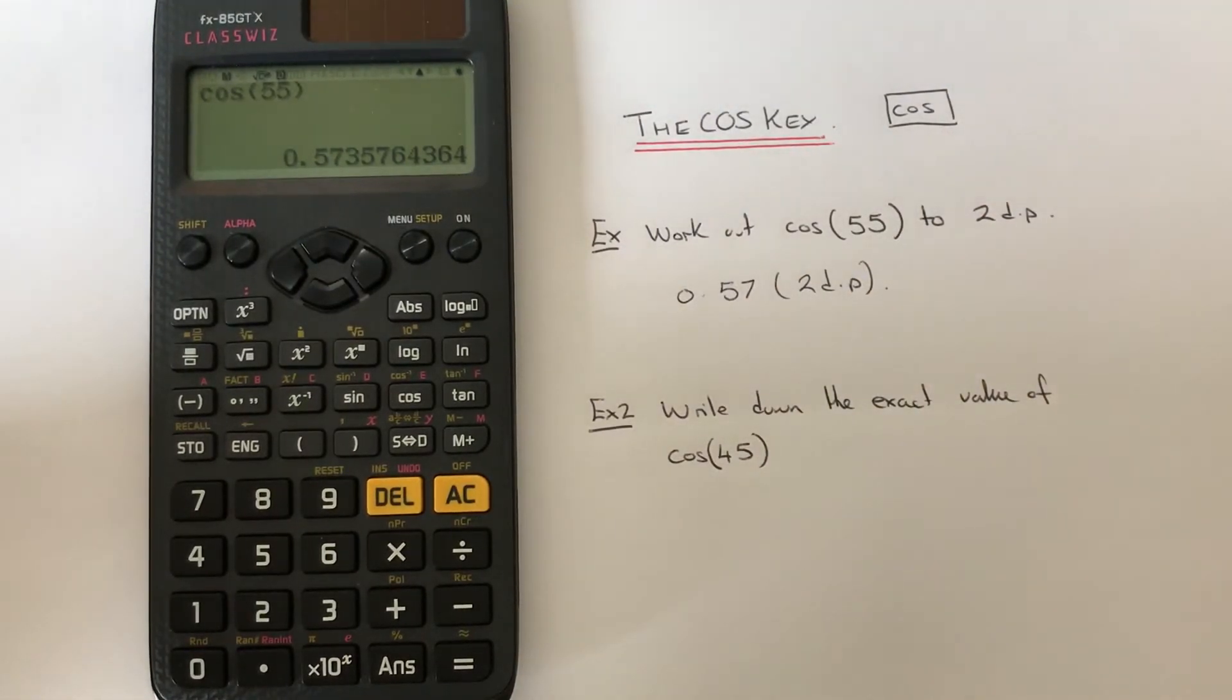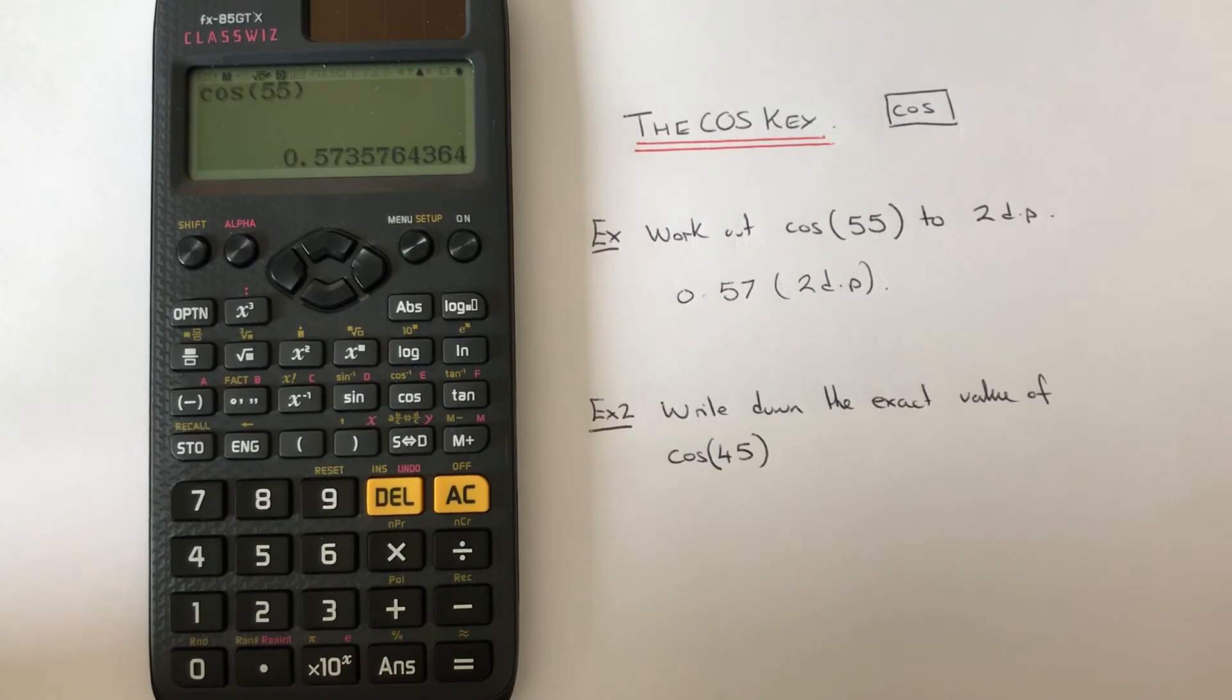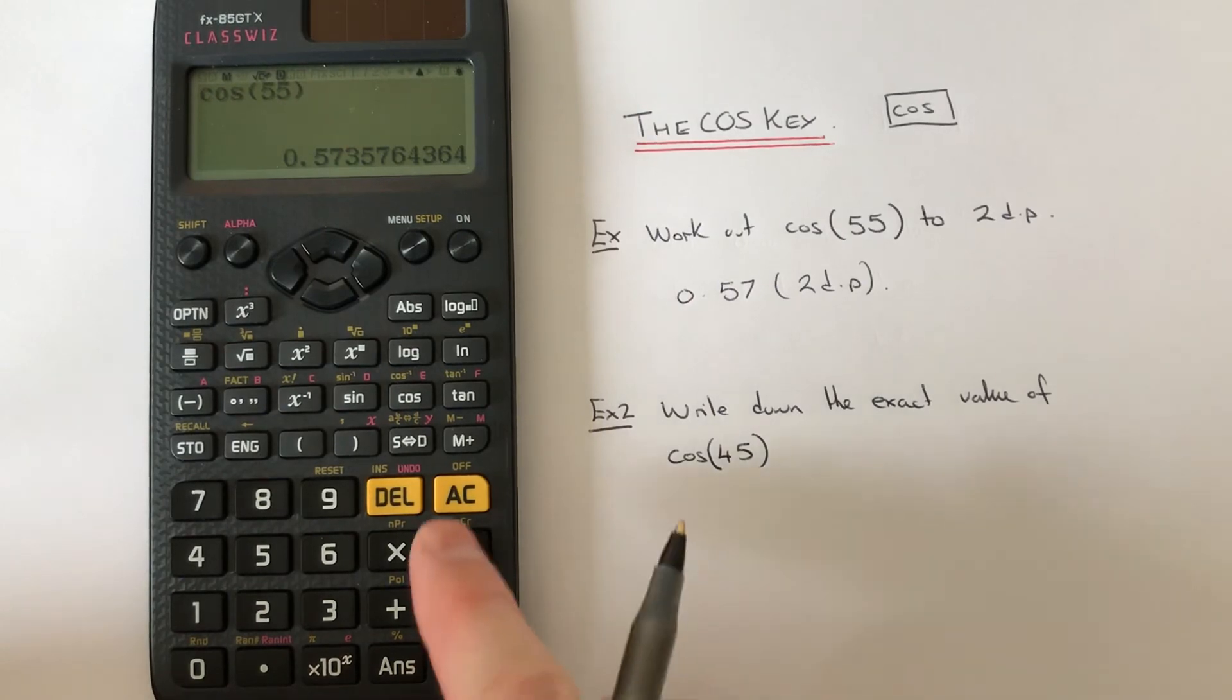Let's move on to example two. We've got to write down the exact value of cos 45. It's also useful, the cos key, to write down the exact answer, so that's the answer in surd form.